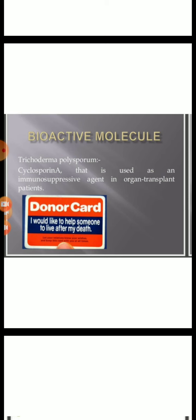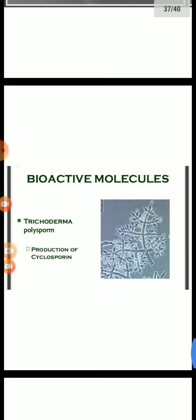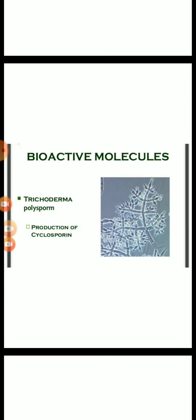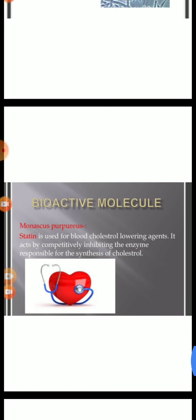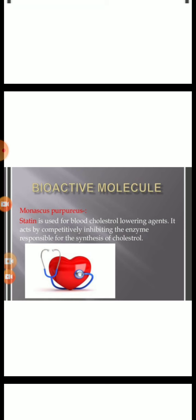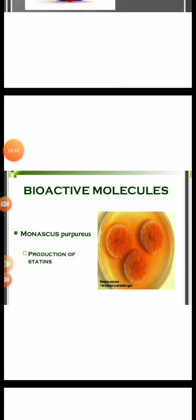The next use of microbes in industry is the formation of bioactive molecules. Cyclosporin A, used as an immunosuppressive agent in organ transplant patients, is produced by the fungus Trichoderma polysporum. Statins, produced by the yeast Monascus purpureus, have been commercialized as blood cholesterol-lowering agents. They act by competitively inhibiting the enzyme responsible for the synthesis of cholesterol.